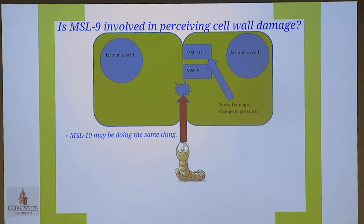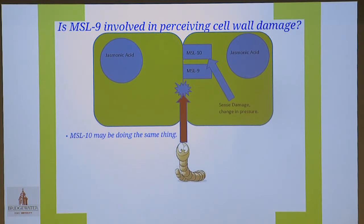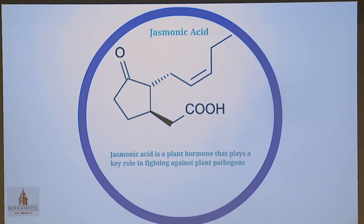So back to my question: Is MSL9 involved in perceiving cell wall damage? When the nematode goes through the plant, it goes between cells and causes a lot of damage. We're thinking that MSL9, as well as MSL10 — its sister gene — is somehow perceiving the cell wall damage, opening up its channel, allowing a flux of ions to pass through, which cascades into a lot of signaling pathways, including the signaling pathway for jasmonic acid. Jasmonic acid is a naturally produced plant hormone which fights off infections of certain pathogens like the root knot nematode. But studies have shown that the root knot nematode has adapted to actually use this jasmonic acid to help infect the plant, which is a little ironic since the plant produces it to fight off the infection.